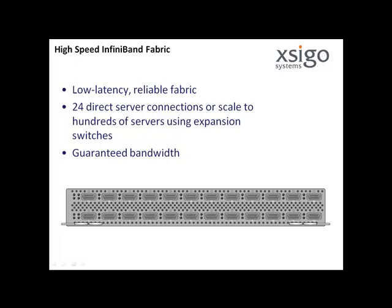High-speed InfiniBand fabric: this low-latency, reliable fabric allows 24 direct server connections, or scales to hundreds of servers using expansion switches. Each server receives 40 gigabits of bi-directional bandwidth. A standard-based subnet manager runs on the SEGO system control processor to build and manage the InfiniBand fabric.